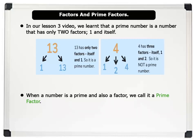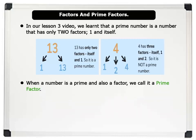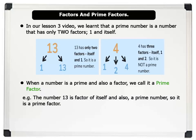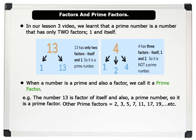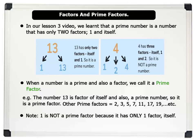Now, when a number is prime and also a factor, it is called a prime factor. For example, the number 13 is both prime and a factor of itself, so it is a prime factor. Other examples of prime factors are: 2, 3, 5, 7, 11, 17, 19, etc. Note that the number 1 is not a prime factor, because it has only one factor — itself.